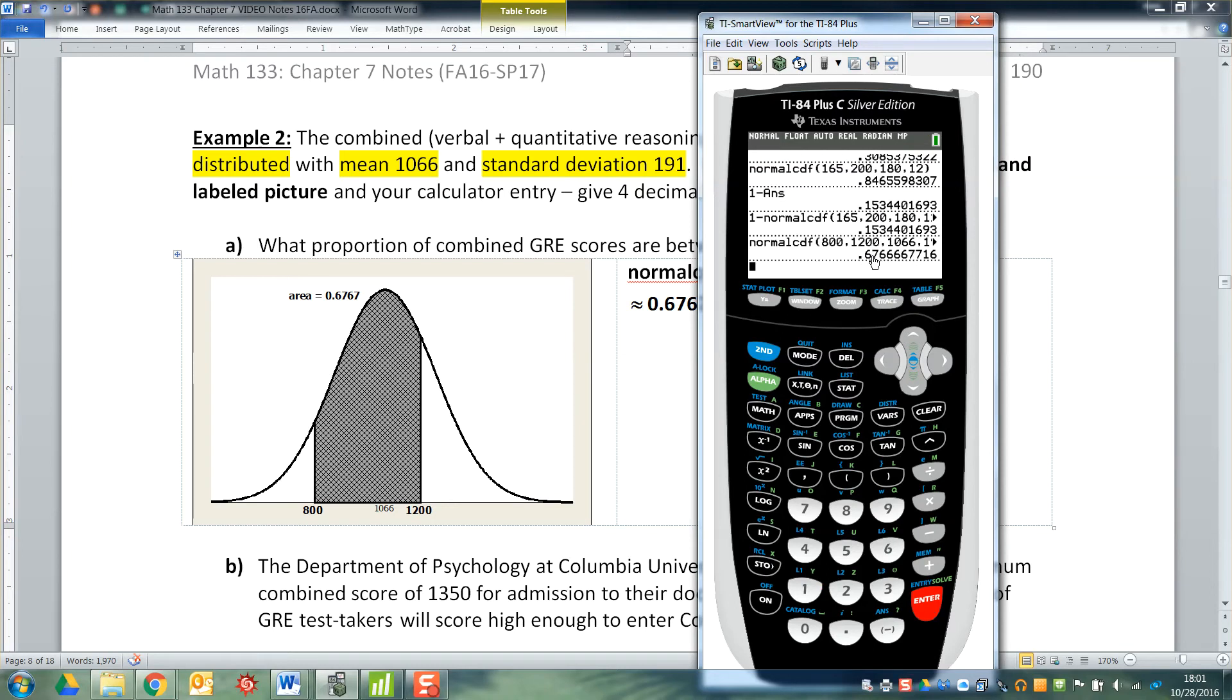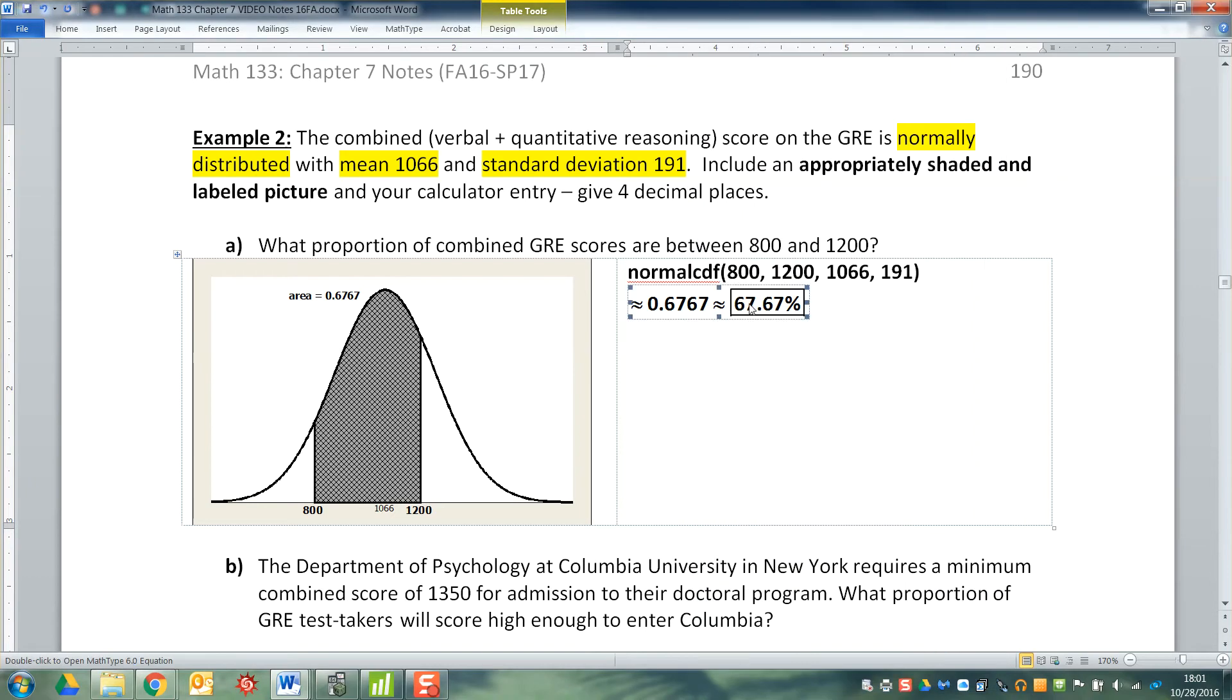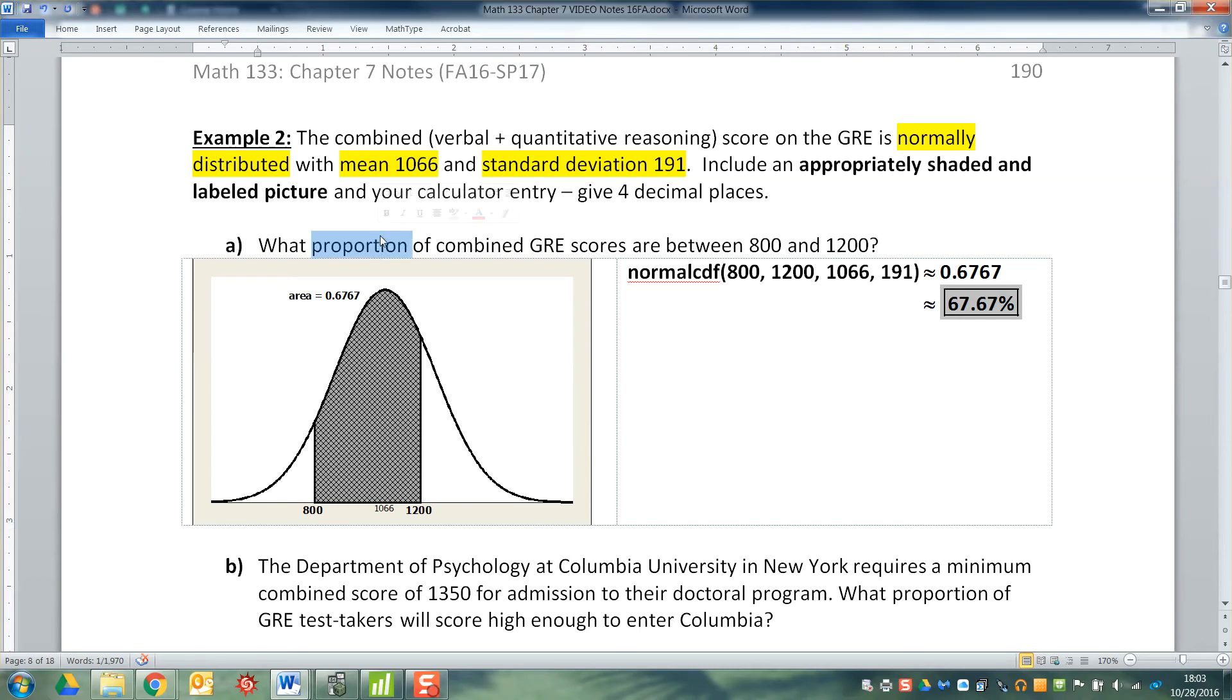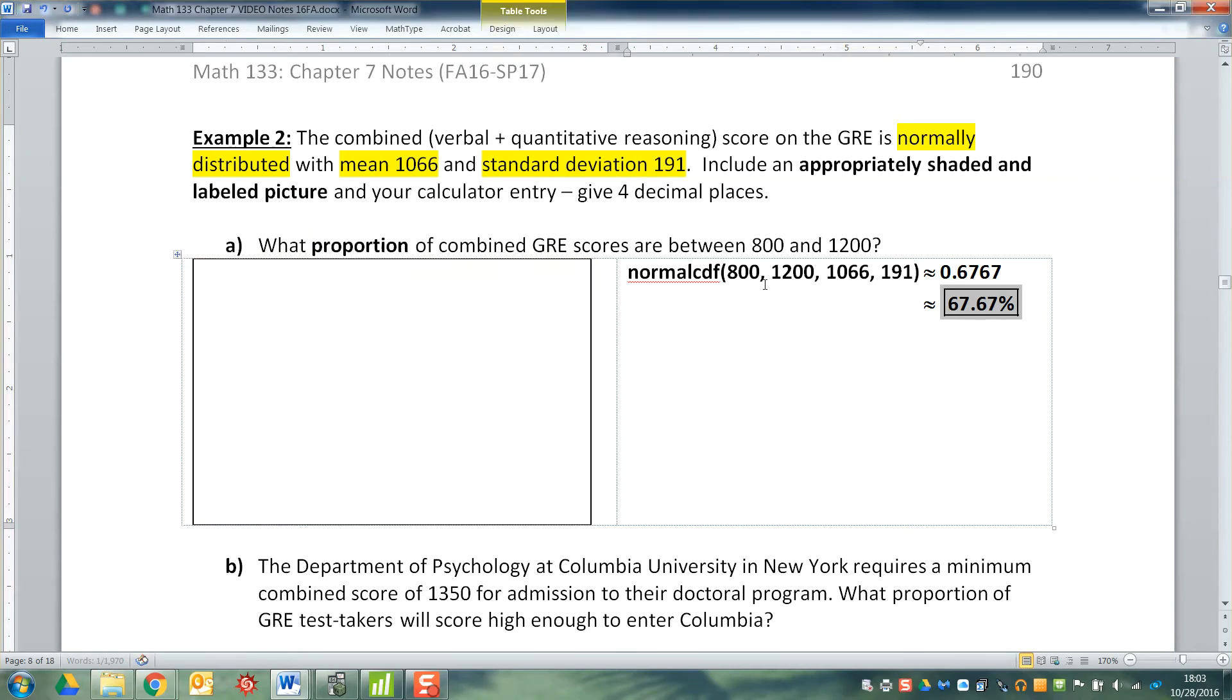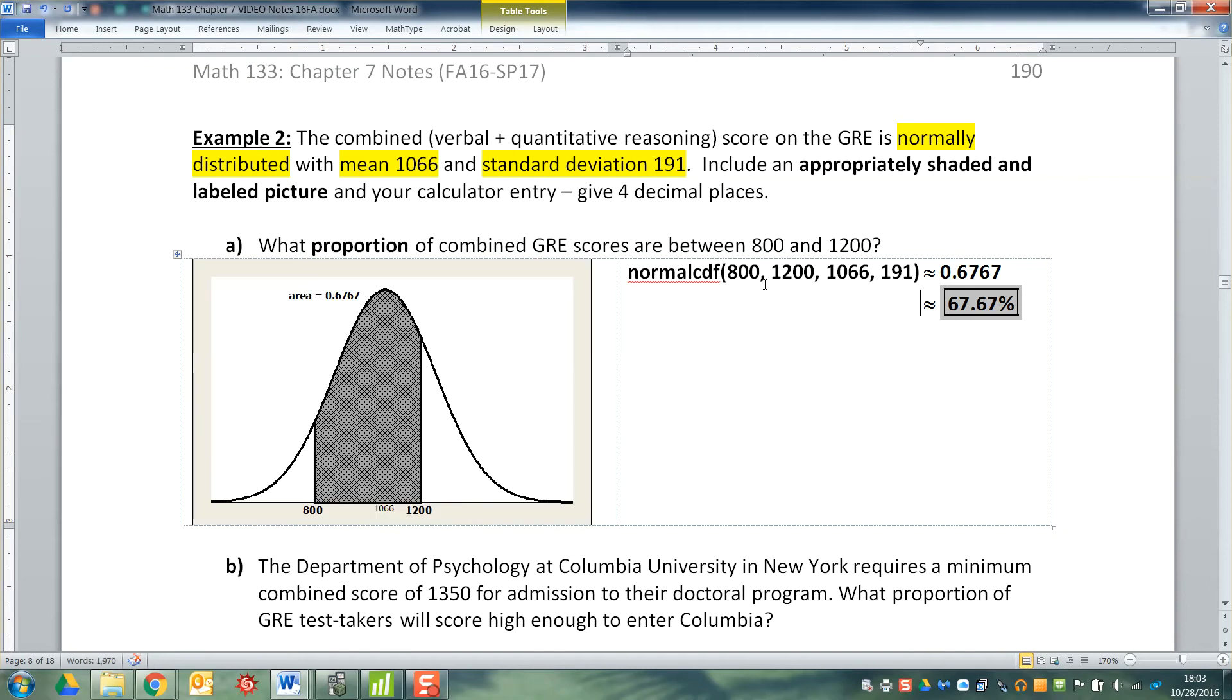I'm going to paste that in there and press enter to get it to run it. And when you round that, that's 0.6767 rounded, and that's where I got 0.6767. Since they wanted a proportion that sort of implies a percentage, so I rewrote it as a percent instead of 0.6767 I wrote 67.67%, just because the word 'proportion' is more a percentage word.